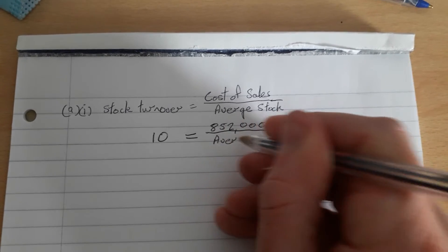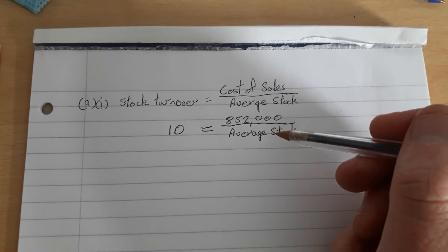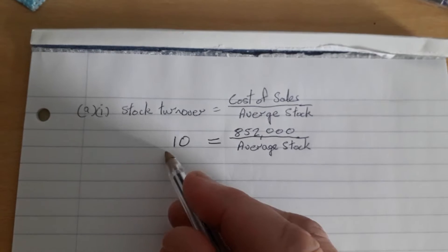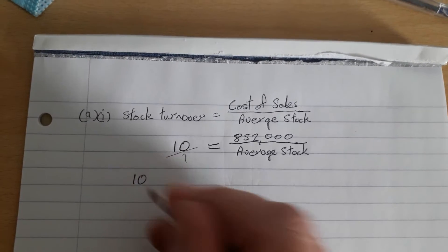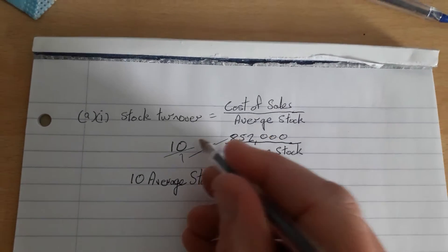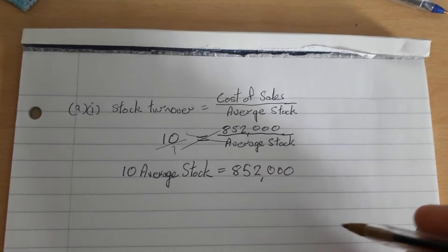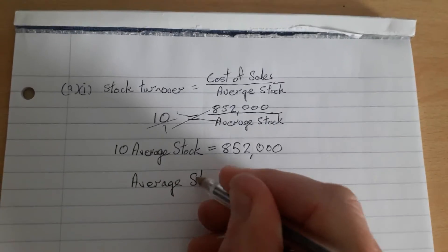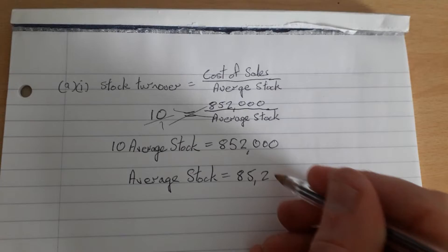We don't know what the average stock is, but we are going to use this formula and solve the equation to find the value of average stock. I would cross multiply: 10 times average stock equals 1 times 852,000, which is just 852,000. Then I'm going to divide across by 10 to find the value of average stock, and 852,000 divided by 10 is 85,200.